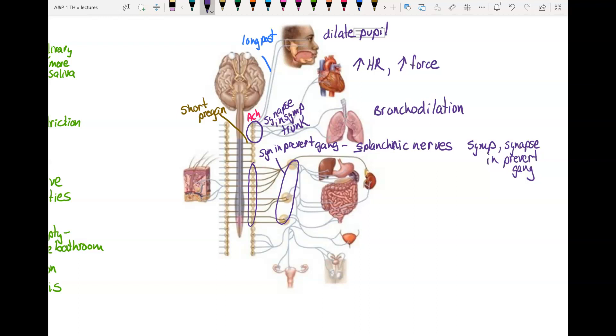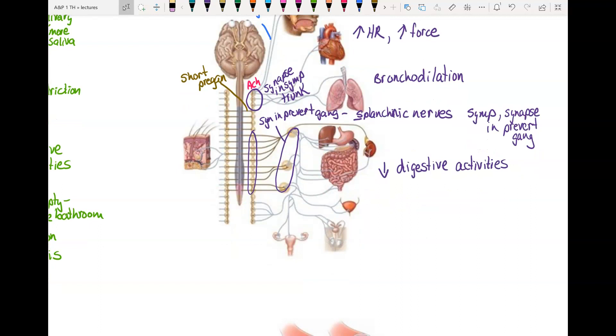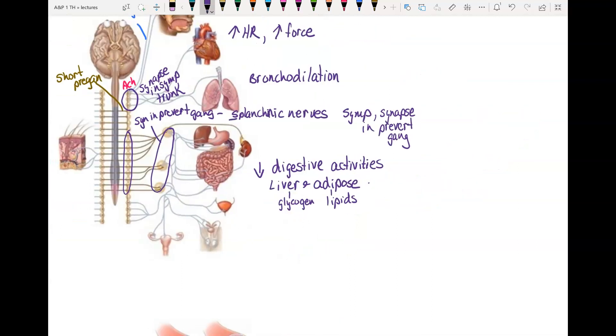So we have the digestive system. We're going to decrease digestive activities. If you're in an emergency or you're really active, you can't divert your blood and your energy to digesting food. So you inhibit that. We also have the liver and the adipose. They store nutrients. You'll recall that the liver stores glycogen, and the adipose stores your lipids.